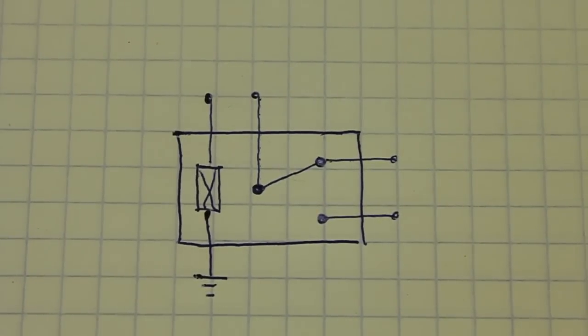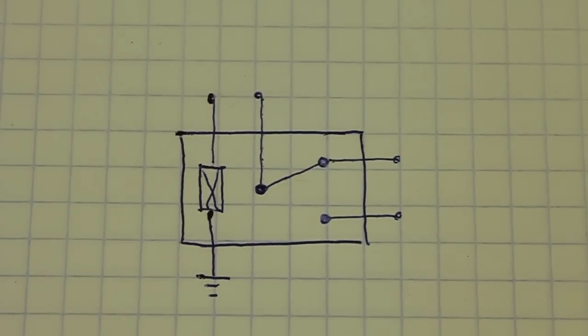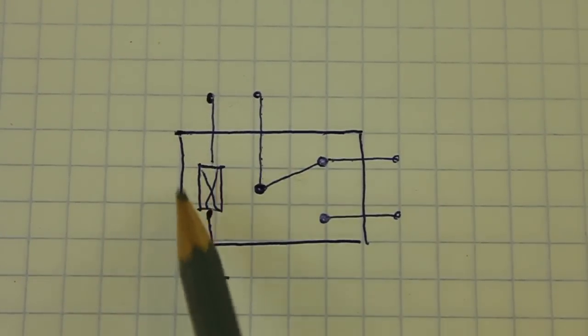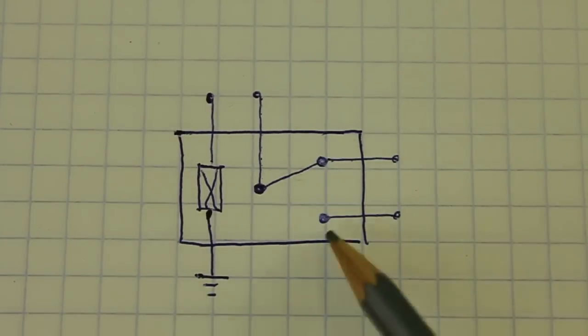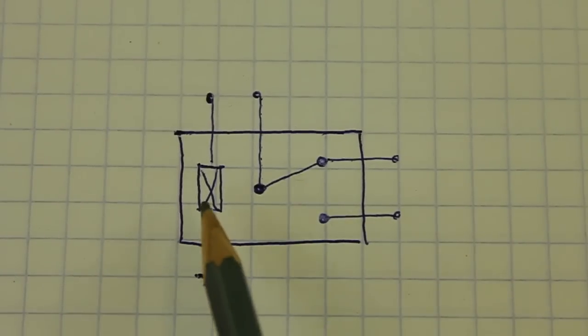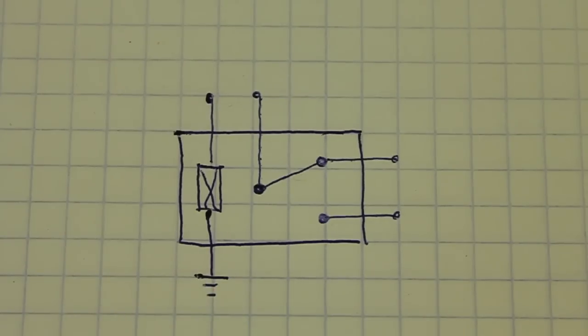This is how I will be drawing the relays in the schematics. Here we have the coil, the common contact, the normally closed contact and the normally open contact. One terminal of the coil goes to negative or ground and the other is free for connection.